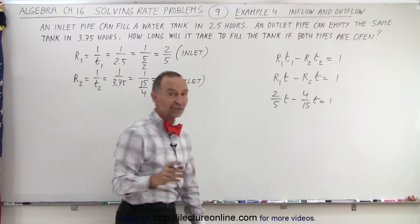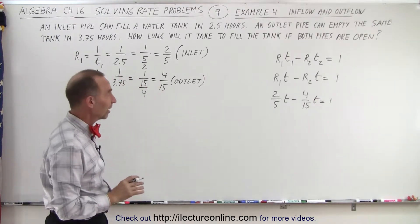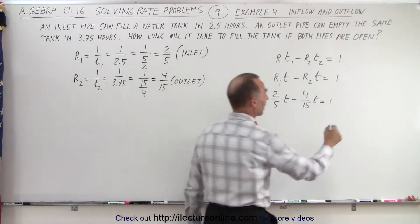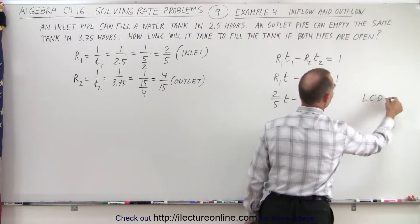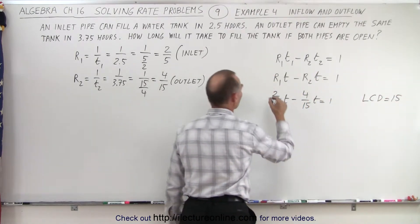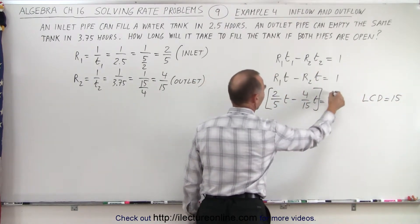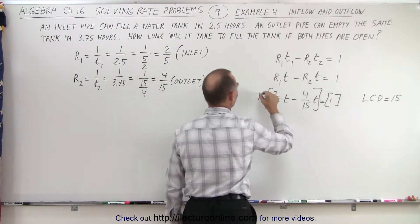And now this can be solved for T after we multiply both sides of the equation by the lowest common denominator. In this case, the lowest common denominator is 15. So we're going to multiply the left and the right side by 15.